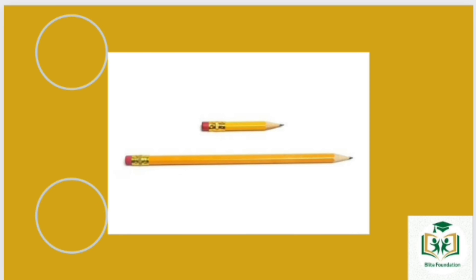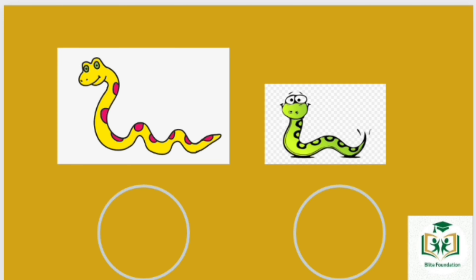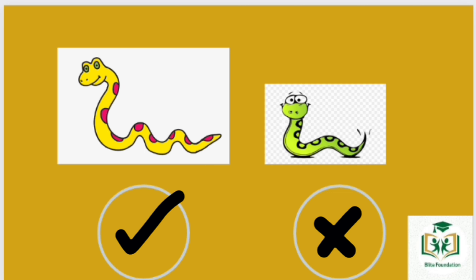Tick the longer object and cross the shorter one. The pencil which is below is the longer one. The pencil which is above is the shorter one. Left snake is the longer one. Right snake is the shorter one.